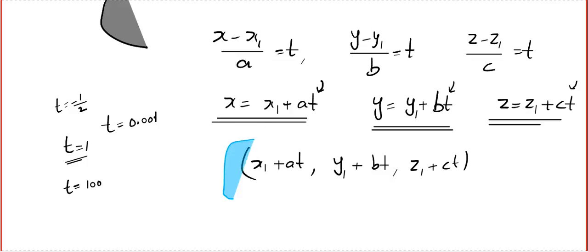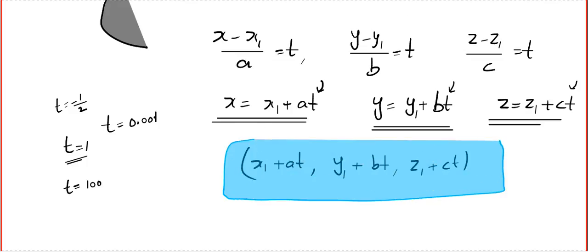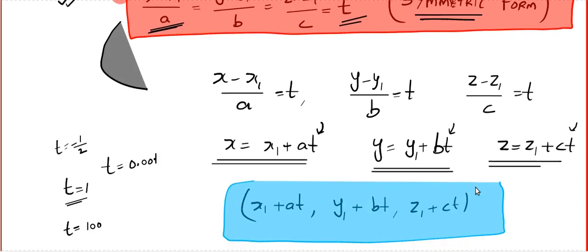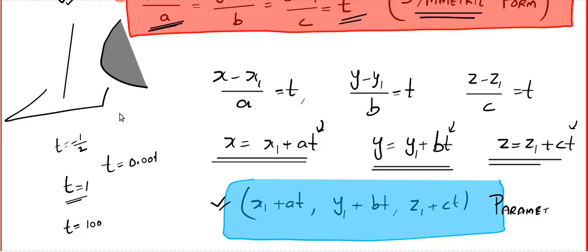The first form is called the Cartesian form or symmetric form, and this form is called the parametric form of the line. This is one of the most useful forms to tackle many problems in your syllabus — especially when finding the point of intersection of a line and a plane, or of a cone and a line.